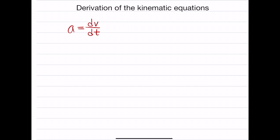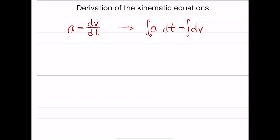First, we're going to take the derivative on the right and split it apart. Although it's not technically a fraction, you can treat it like a fraction by multiplying both sides by dt. That gives us a times dt is equal to dv. Then we can integrate both sides. We still need to put the appropriate limits of integration. For the acceleration side, we are going to go from time 0 to time t, whatever that time is.